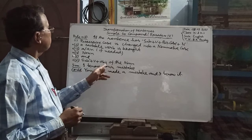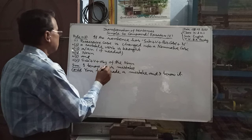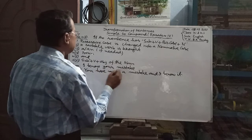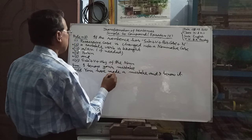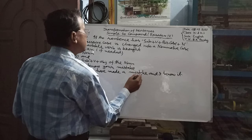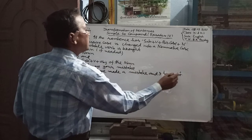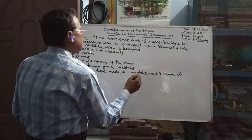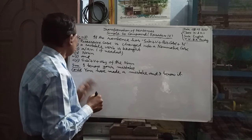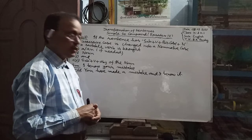For example: 'I know your mistake.' Here, 'your' is changed into 'you'. 'Have made' is brought, 'a' is brought also, then 'mistake', then 'and', then subject plus verb, and 'it' is the objective case of 'mistake'. So this sentence becomes: 'You have made a mistake and I know it.'